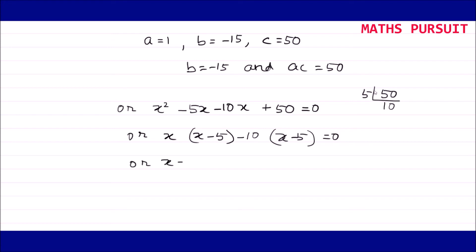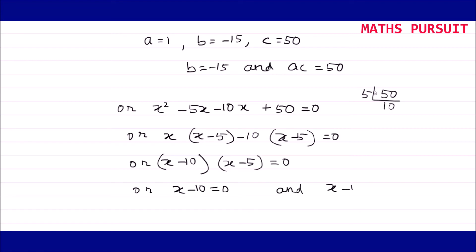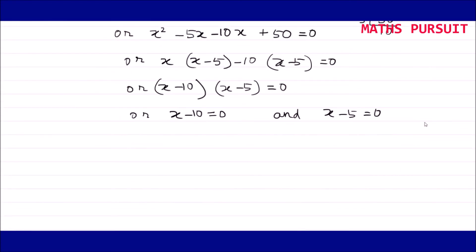Taking x as common from the first two terms gives x into x minus 5, and from the last two terms minus 10 into x minus 5. So we can write x minus 10 into x minus 5 equals 0. Therefore x minus 10 equals 0, giving x equals 10, or x minus 5 equals 0, giving x equals 5.